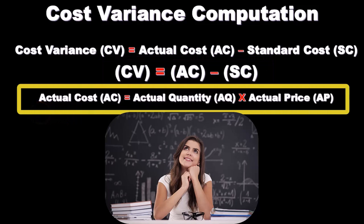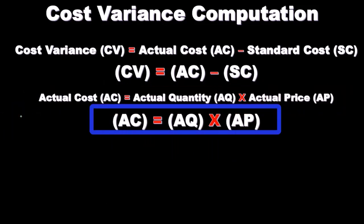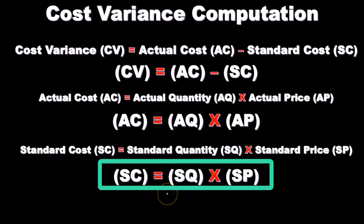The actual cost, or AC, equals the actual quantity times the actual price — that is, AC = AQ × AP. We're breaking down the actual cost into its component parts: the quantity we have times the price per quantity. The standard cost, SC, equals the standard quantity times the standard price — SC = SQ × SP — representing what we would expect under normal conditions.